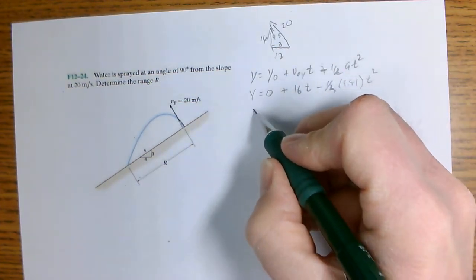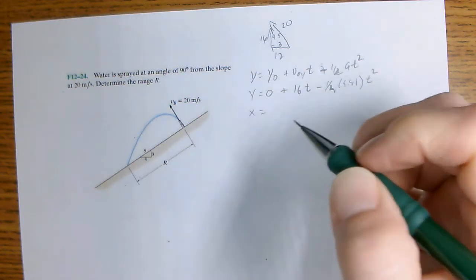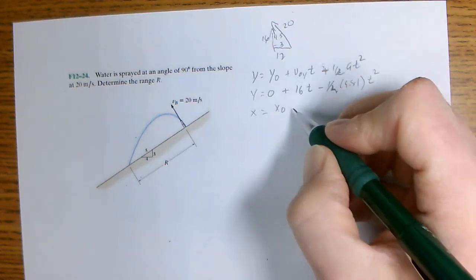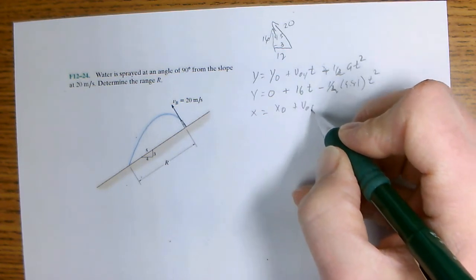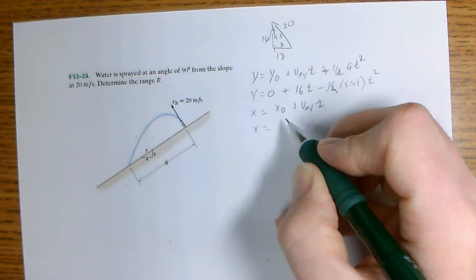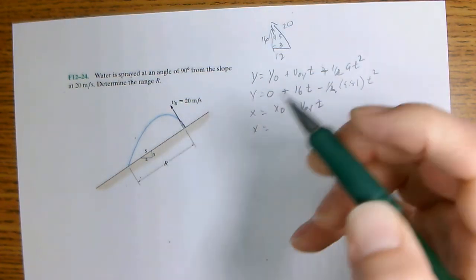So then for the X direction, in the X direction there is no acceleration so we have X equals X0 plus V0X T. And so X is equal to, X0 is we'll call this zero-zero.